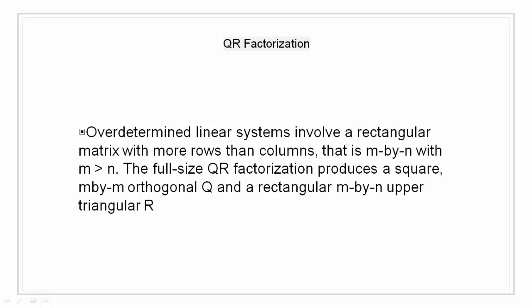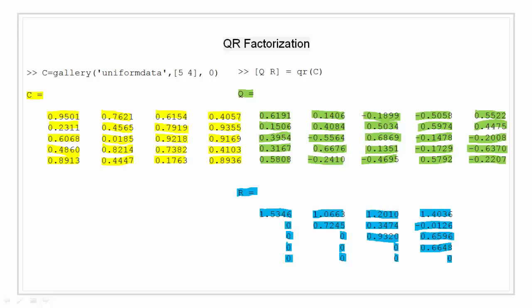First for example I am going to create a matrix C with five rows and four columns using function gallery. For your information, function gallery uses the provided matrix family to create the desired size of matrix from available built-in matrix files. So when I say uniform data there is already a mat file in built-in MATLAB of uniform data and I am saying to create five rows and four columns so I get a matrix C. The matrix highlighted in yellow is the matrix that I created which is matrix C. On this matrix I am going to apply QR decomposition. As you can see this is a full size QR decomposition so a square orthogonal Q of dimension five by five is produced and a rectangular upper matrix R is produced. Q is highlighted as green and R is highlighted as blue.